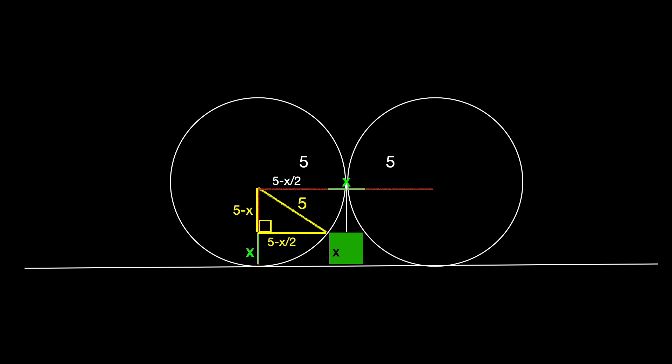Now we're in a position to apply the Pythagorean theorem to the yellow triangle. The sum of the square of the legs of the triangle must be the square of the hypotenuse. So from that we get that 5 minus x squared plus 5 minus x over 2 squared is 25, and we'll use this to solve for x.